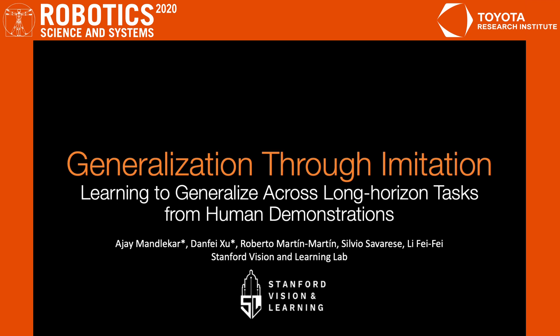We present Generalization Through Imitation, an imitation learning method that can generalize to new tasks by learning from a fixed set of human demonstrations.